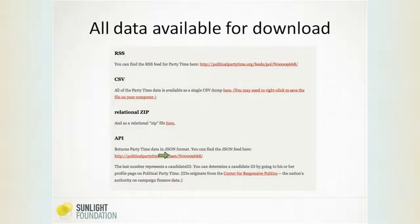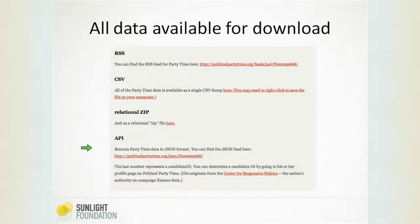One of the great things about Party Time is that all this data is available for download in different formats. You can get an RSS feed, a CSV with all those fields we type in from the invitations — how much money they're asking for, the hosts, entertainment types, the different venues. We have a relational zip, and if you're skilled in Access or another database program with relational tables, you can quickly see how many members of the appropriations committee held fundraisers, how many members of leadership held fundraisers, Senate Democrats versus Senate Republicans. We don't have a complete list of fundraisers — we don't pretend that we do — but at least from the ones we know about, you can see who's holding a lot of them. Lastly, we have an API — if you have programming skills, you can get to the data that way as well.